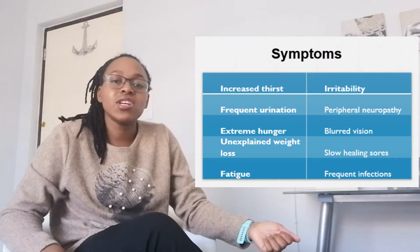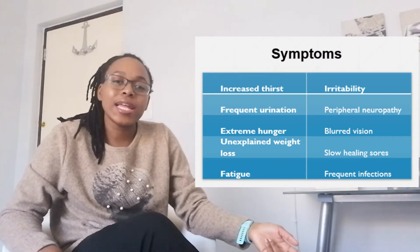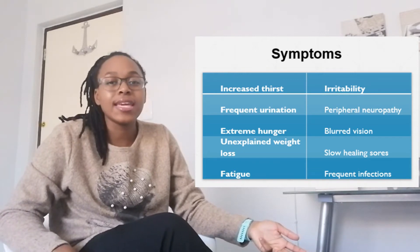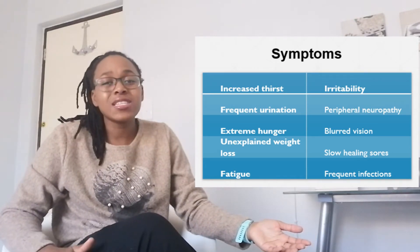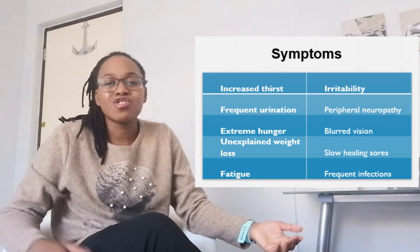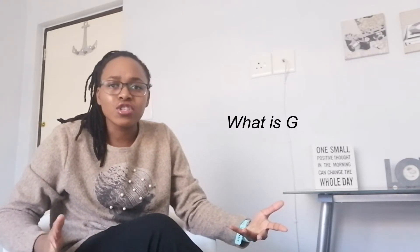I will discuss all the different types in more detail in this lecture. People with diabetes generally have the same symptoms, independent of the type. What you are likely to experience if you have diabetes is frequent urination, extreme hunger, unexplained weight loss, peripheral neuropathy, blurred vision, slow healing of your sores or wounds, and frequent infections.